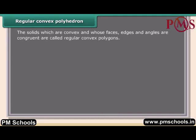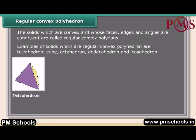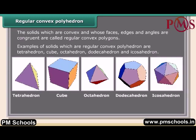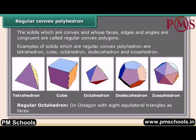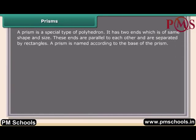Regular convex polyhedrons are solids which are convex and whose faces, edges, and angles are all congruent. Examples of regular convex polyhedrons are the tetrahedron, cube, octahedron, dodecahedron, and icosahedron.